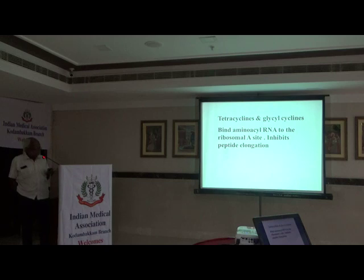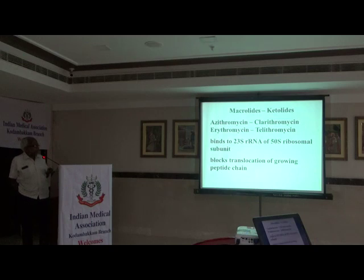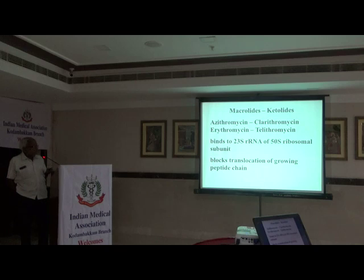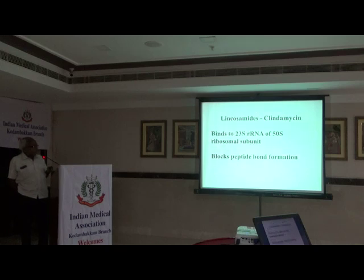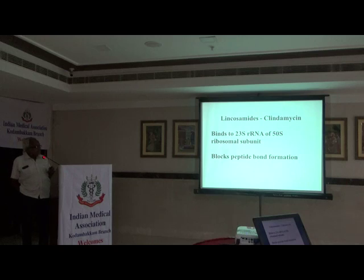Each drug class has its own mechanism, studied thoroughly by researchers in pharmacology. Macrolides act on the 23S and 50S ribosomal subunit and block translocation of the growing peptide chain. Lincosamides, clindamycin, also act on the 23S and 50S ribosomal subunit. They block peptide bond formation. The same ribosomal site can be targeted but the outcome is different — some block elongation, some block peptide bond formation.